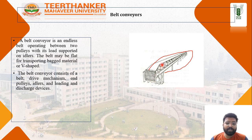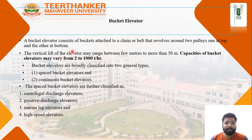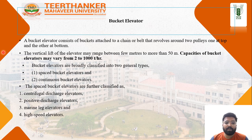A bucket elevator consists of buckets attached to a chain or belt that revolves around two pulleys — one at the top and one at the bottom. The vertical lift of the elevator ranges from a few meters to more than 50 meters, and the capacity of a bucket elevator varies from 2 to 100 tons per hour.